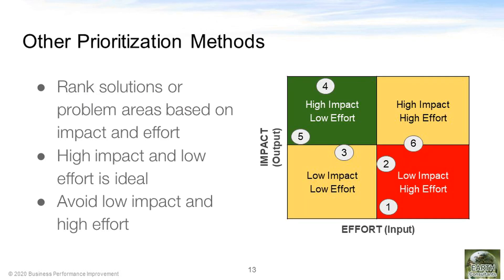Previously we also mentioned the impact and effort matrix, which can be used if you don't want to go through this level of detail with your prioritization. You can simply identify the different projects and put them into four buckets based on how much impact they may have and how much effort it might take. We're looking for projects in the upper left corner that have high impact and a low amount of effort, and trying to avoid the ones with low impact and a high amount of effort.